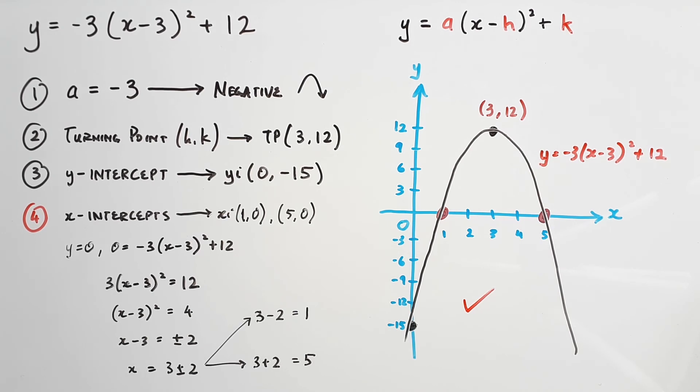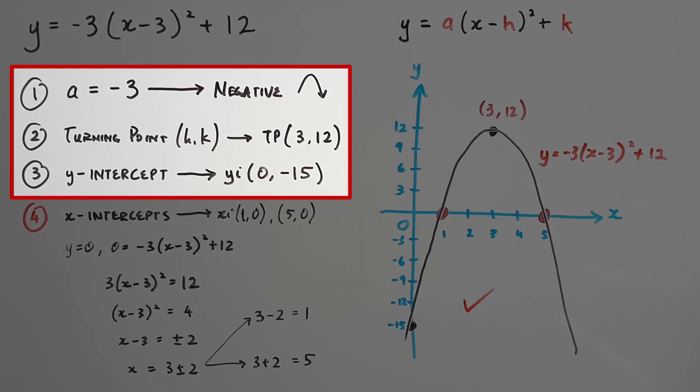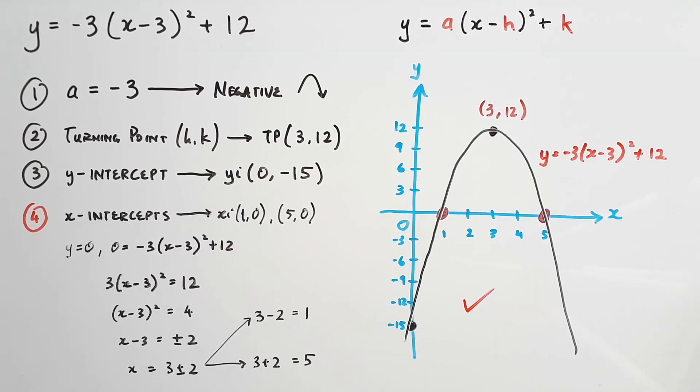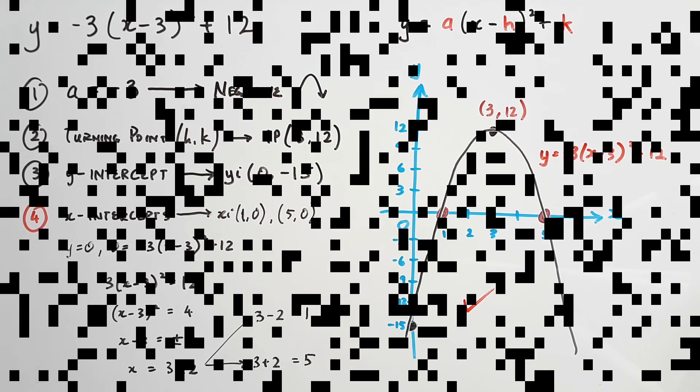So in summary, if you only needed the graph for understanding a problem, then a quick sketch without the x-intercepts is usually sufficient. But if you needed more accuracy, or you were required to sketch a graph to get some marks, then it's worth going all the way.